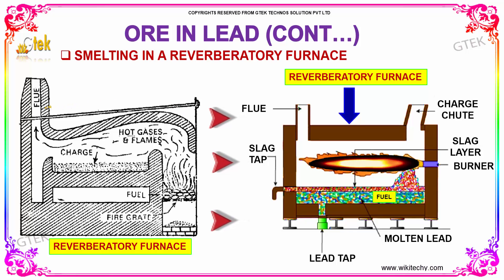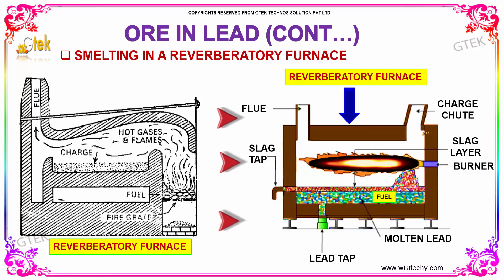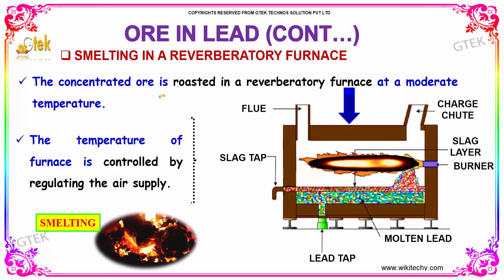This is followed by the smelting process, which is done in a reverberatory furnace. The furnace has a lead tap, molten lead, fuel, a slag tap, a slag layer, a burner, and a charged chute. The concentrated ore is roasted in the reverberatory furnace at a moderate temperature. The temperature of the furnace is controlled by regulating the air supply.